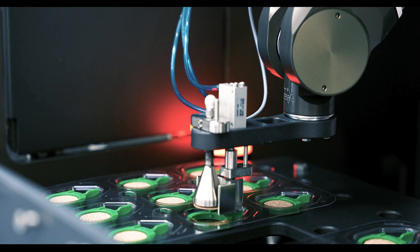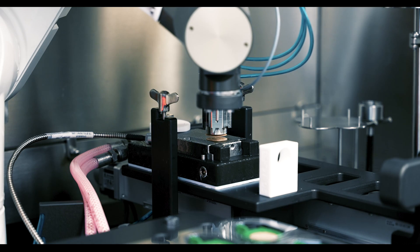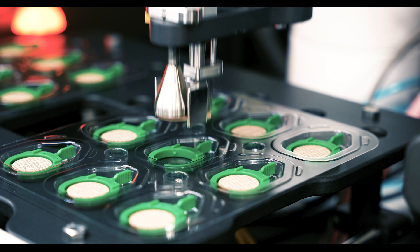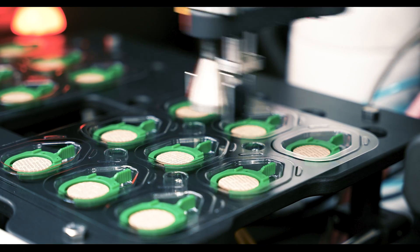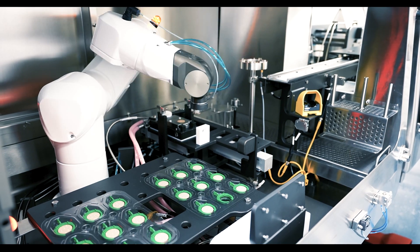After the trays are complete, they're passed manually to a conveying station which conveys them out of the coating cell to the next cell which performs a sealing operation.